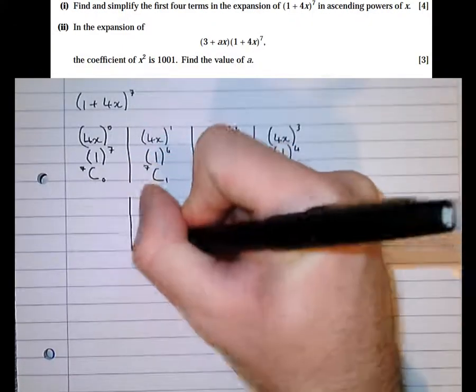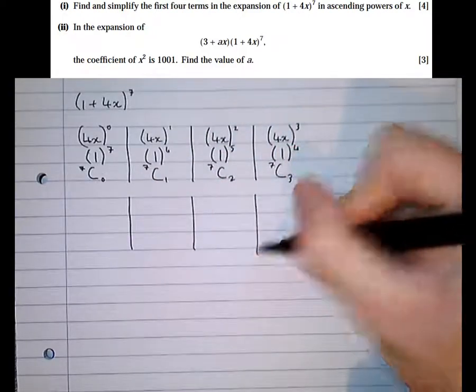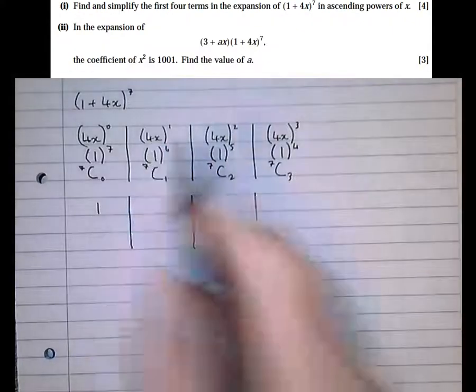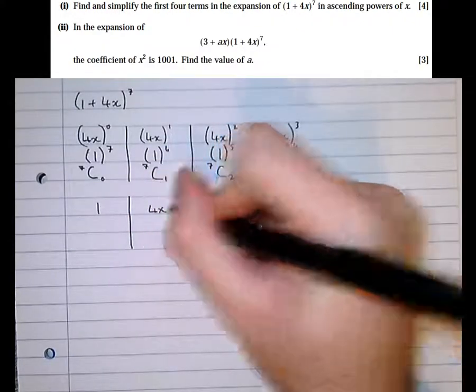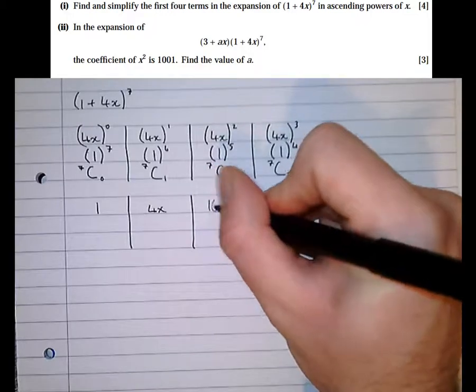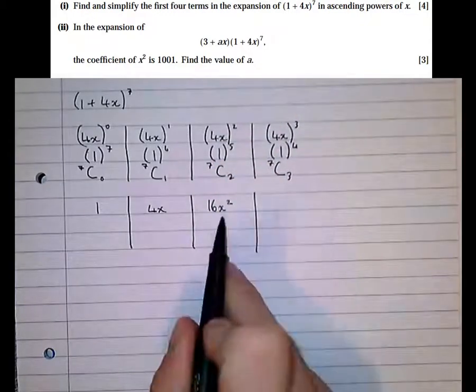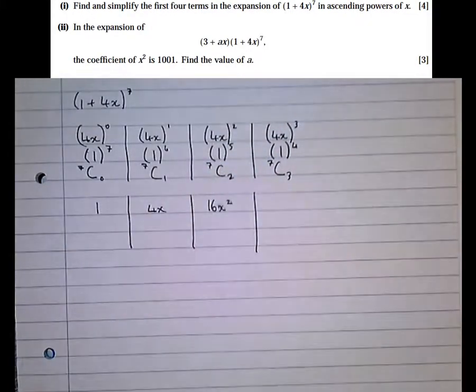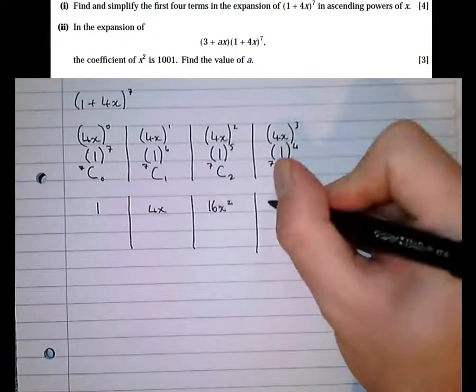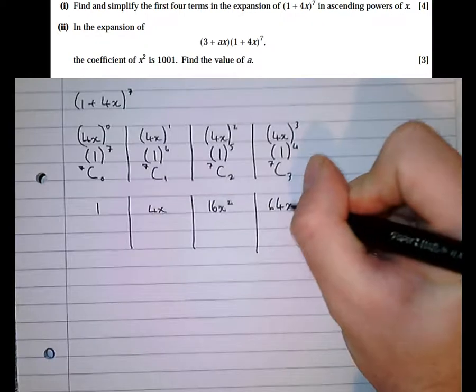Doing a bit more working on this now. 4x to the power of 0 is 1, 4x to the power of 1 is 4x, 4x squared - 4x times 4x - is 16x squared. A common mistake there is to forget to square the 4. And 4x cubed - 4x times 4x times 4x - is 64x cubed.